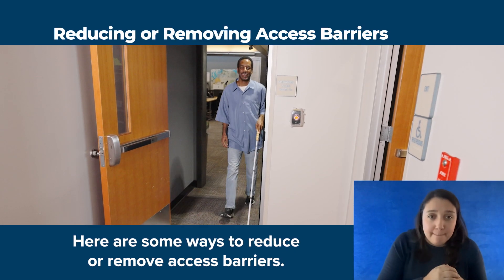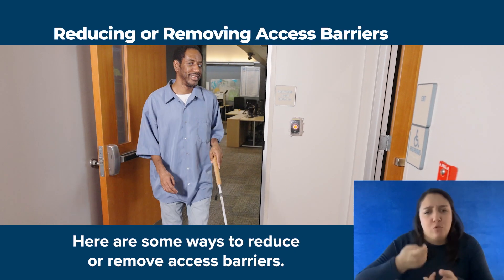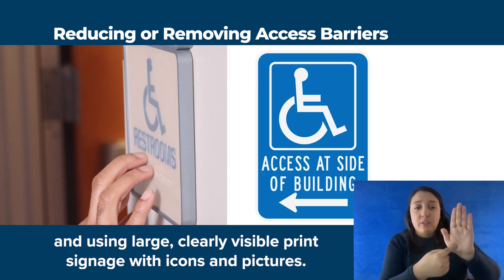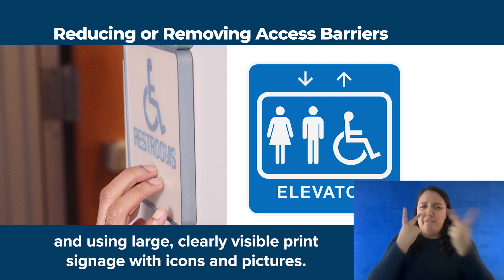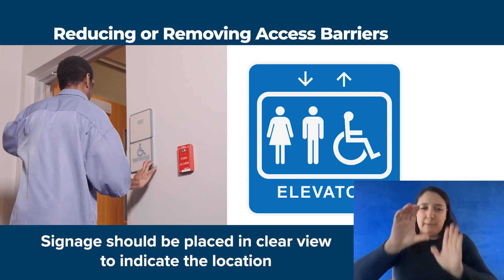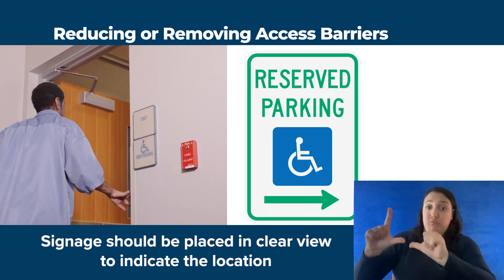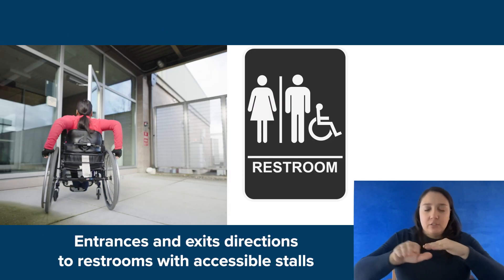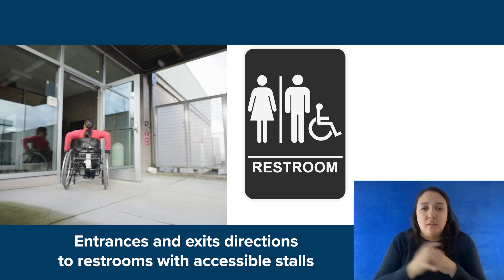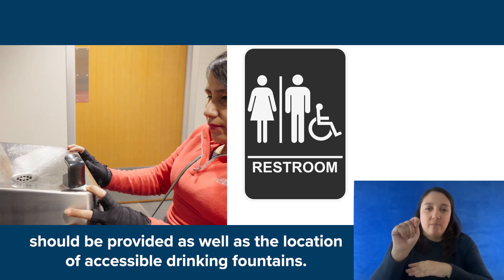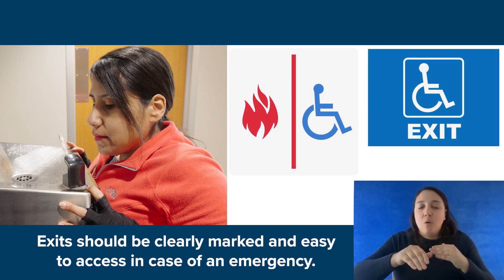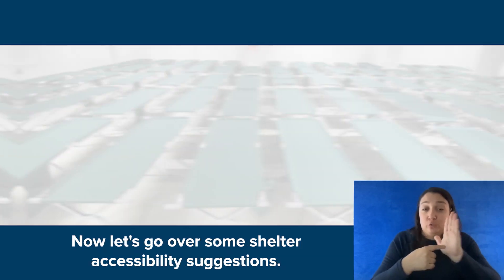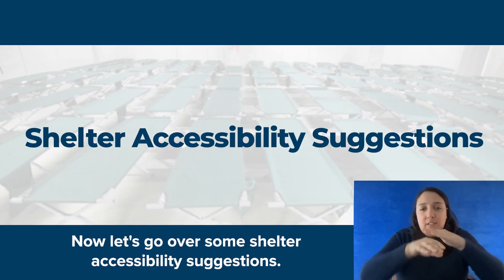Here are some ways to reduce or remove access barriers. Service and directional signage includes creating and using large, clearly visible print signage with icons and pictures. Signage should be placed in clear view to indicate the location of accessible parking spaces, entrances and exits. Directions to restrooms with accessible stalls should be provided, as well as the location of accessible drinking fountains. Exits should be clearly marked and easy to access in case of an emergency.